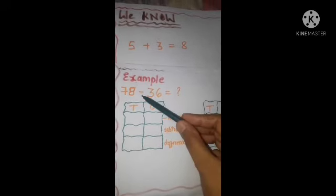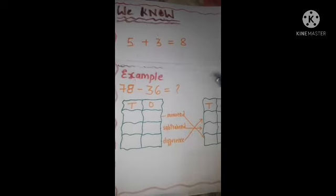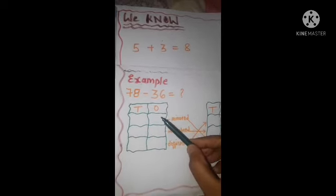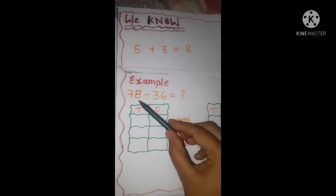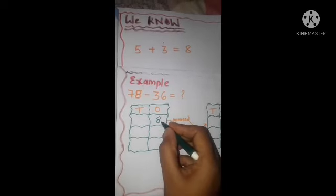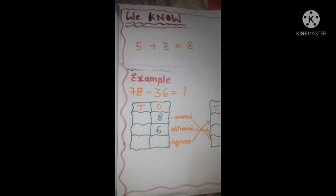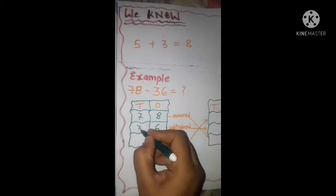Let me explain with an example. The numbers are 78 minus 36. First we arrange them by place value. We write 8 from 78 in the ones place on top and 6 from 36 in the ones place on the bottom. Then we write 7 from 78 in the tens place on top and 3 from 36 in the tens place on the bottom.